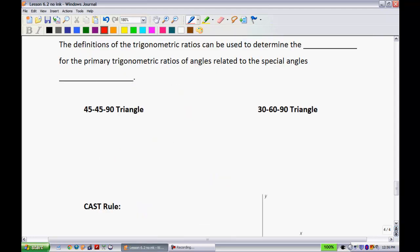So to finish this off, the definitions of the trigonometric ratios can be used to determine exact values for the primary trigonometric ratios of angles related to the special angles, 30 degrees, 45 degrees, and 60 degrees. And these are going to be known, I'm going to refer to these as your special triangles. And we're going to be using these quite a bit in this unit. Specifically dealing with angles that have 30, 45, or 60 in them.